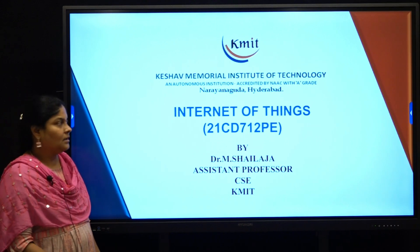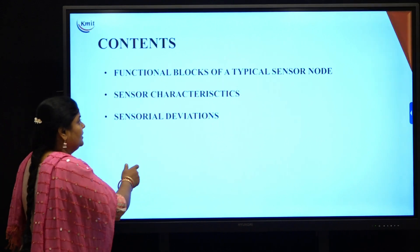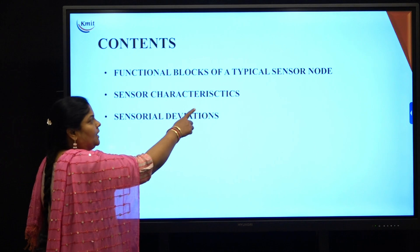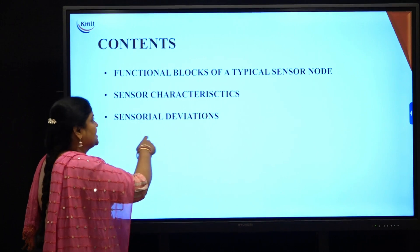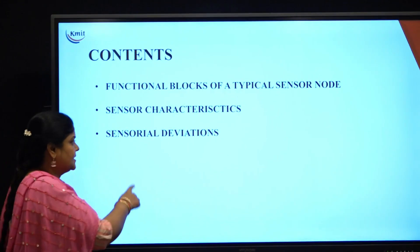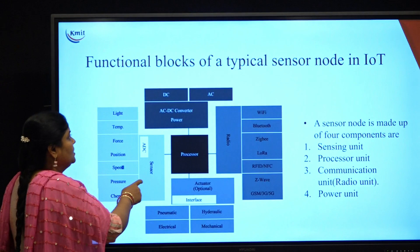The next topic in unit 2 is the functional block of a typical sensor node, sensor characteristics, and sensorial deviations.